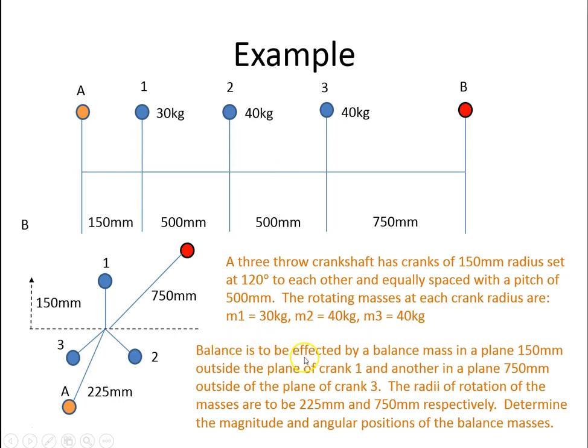Balance is to be effected by a balance mass in a plane 150mm outside of crank 1, and another in a plane 750mm outside of plane of crank 3. The radii of rotation of the masses are to be 225mm for A and 750mm for B.